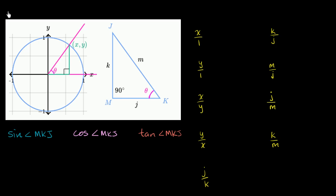Let's remind ourselves of SOH-CAH-TOA, because we have a feeling it might be useful. Sine is opposite over hypotenuse. Cosine is adjacent over hypotenuse. And tangent is opposite over adjacent. We can also remind ourselves of the unit circle definition of trig functions: the cosine of an angle is the x-coordinate, and the sine of where this ray intersects the unit circle is the y-coordinate. We'll see that the unit circle definition is just an extension of SOH-CAH-TOA.